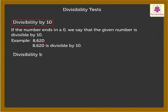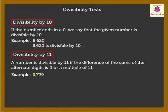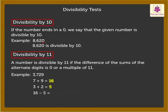Next is divisibility by 11. A number is divisible by 11 if the difference of the sum of the alternate digits is 0 or a multiple of 11. For example, look at the number 3729. By adding the alternate digits 7 and 9, we get the sum as 16. And 3 plus 2 is equal to 5. Now, the difference between the two sums, that is, 16 minus 5, is equal to 11. Therefore, the number 3729 is divisible by 11.